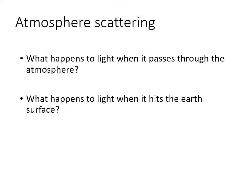Continuing with lecture three of the Remote Sensing Basics module, we're going to be talking about atmospheric scattering — what happens to light when it passes through the atmosphere — and then we'll also be talking about what happens to light when it hits the Earth's surface.